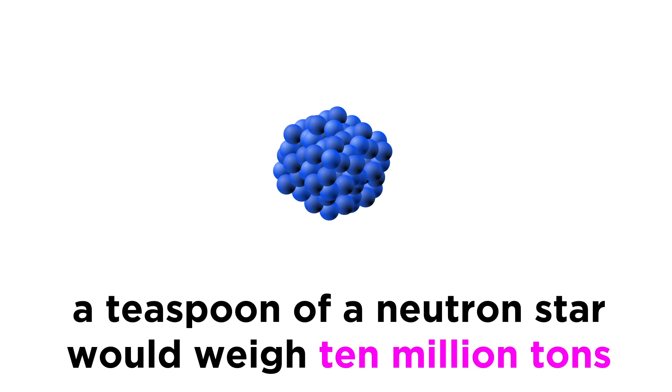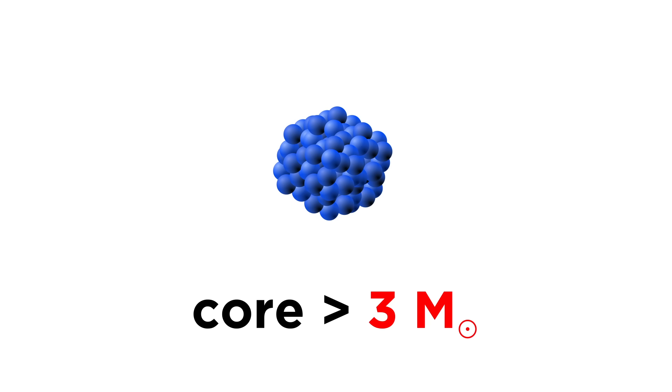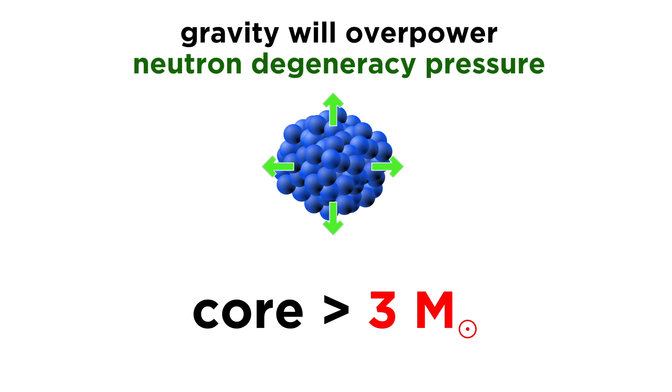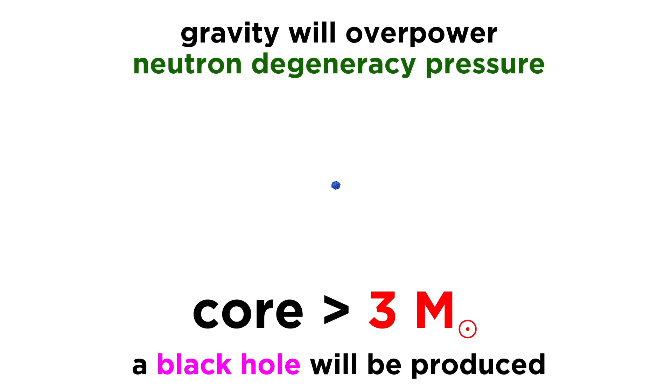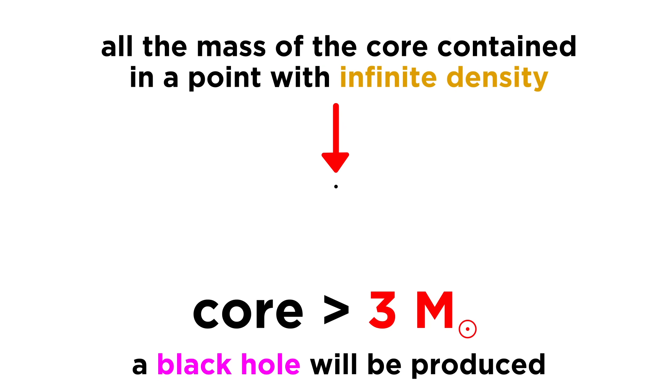A teaspoon of a neutron star would weigh a whopping ten million tons. But even more miraculously, if the core of the star is above around three solar masses, even the outward pressure of neutrons pressing right up against each other, or neutron degeneracy pressure, is not enough to stop the immense gravity, and the neutrons will be crushed together as the remaining mass collapses into a single point of infinite density. The entire mass of the star's core contained within zero volume. This object is called a black hole.